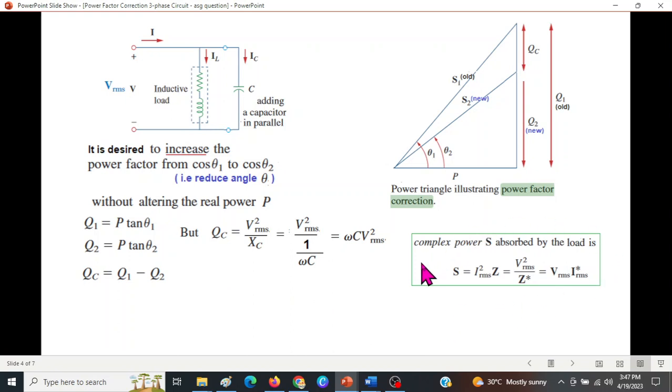Now from the formula of complex power, we know that S can be written as Vrms² over Z, the impedance. Similarly for Q, the reactive power, we can write Vrms² over Xc, the capacitive reactance. So we are using that formula here that the Qc can be written as Vrms² over Xc.